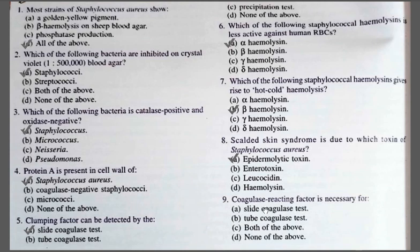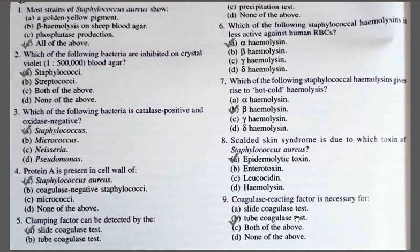Question number nine: Coagulase reacting factor is necessary for — A. Slide coagulase test; B. Tube coagulase test; C. Both; D. None. The correct option is B, tube coagulase test. Coagulase is of two types: bound coagulase for which the slide coagulase test is used, and free coagulase for which the tube coagulase test is used. Free coagulase is produced by the bacteria and released extracellularly. It activates the coagulase reacting factor (CRF) normally present in plasma, which then converts fibrinogen to fibrin.